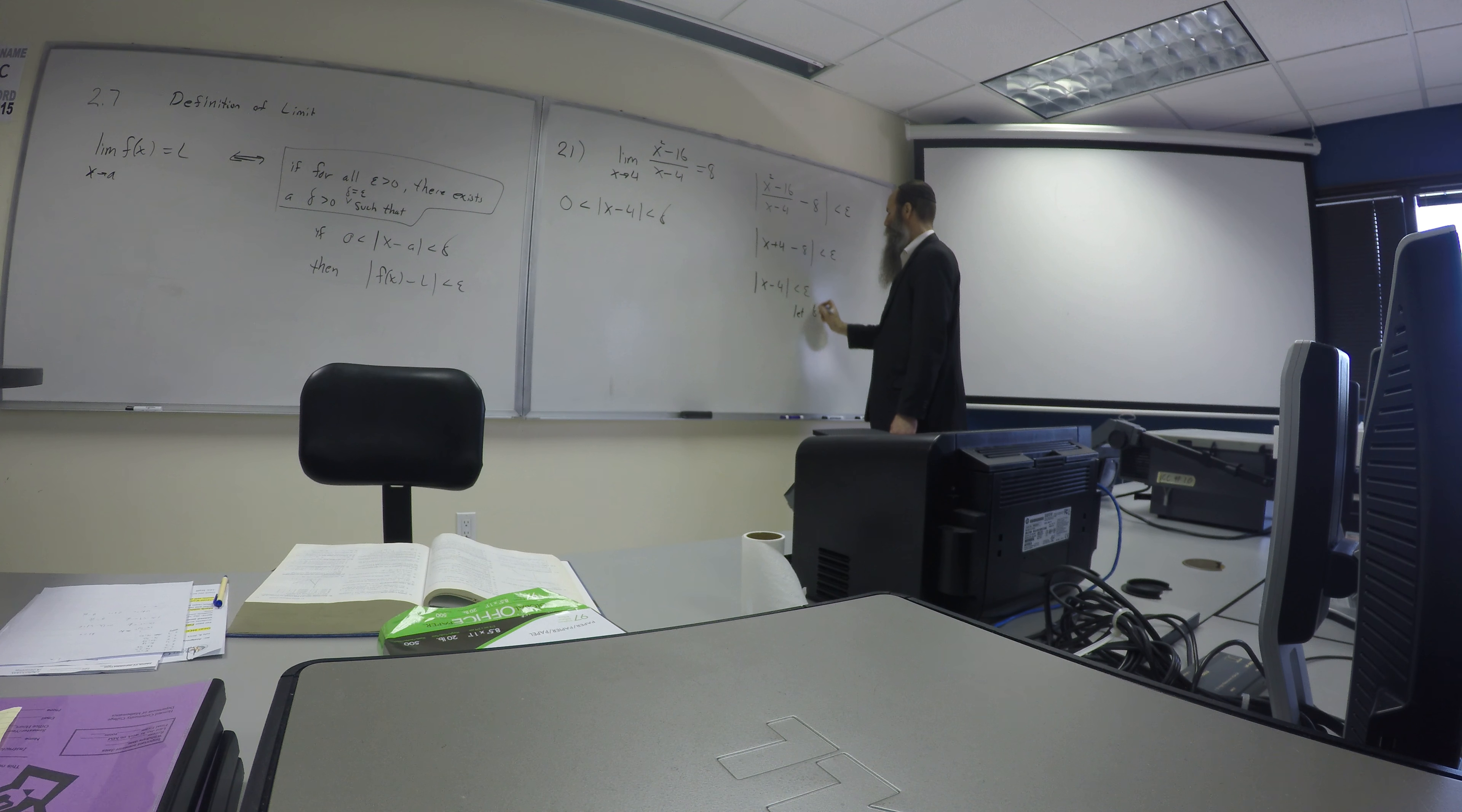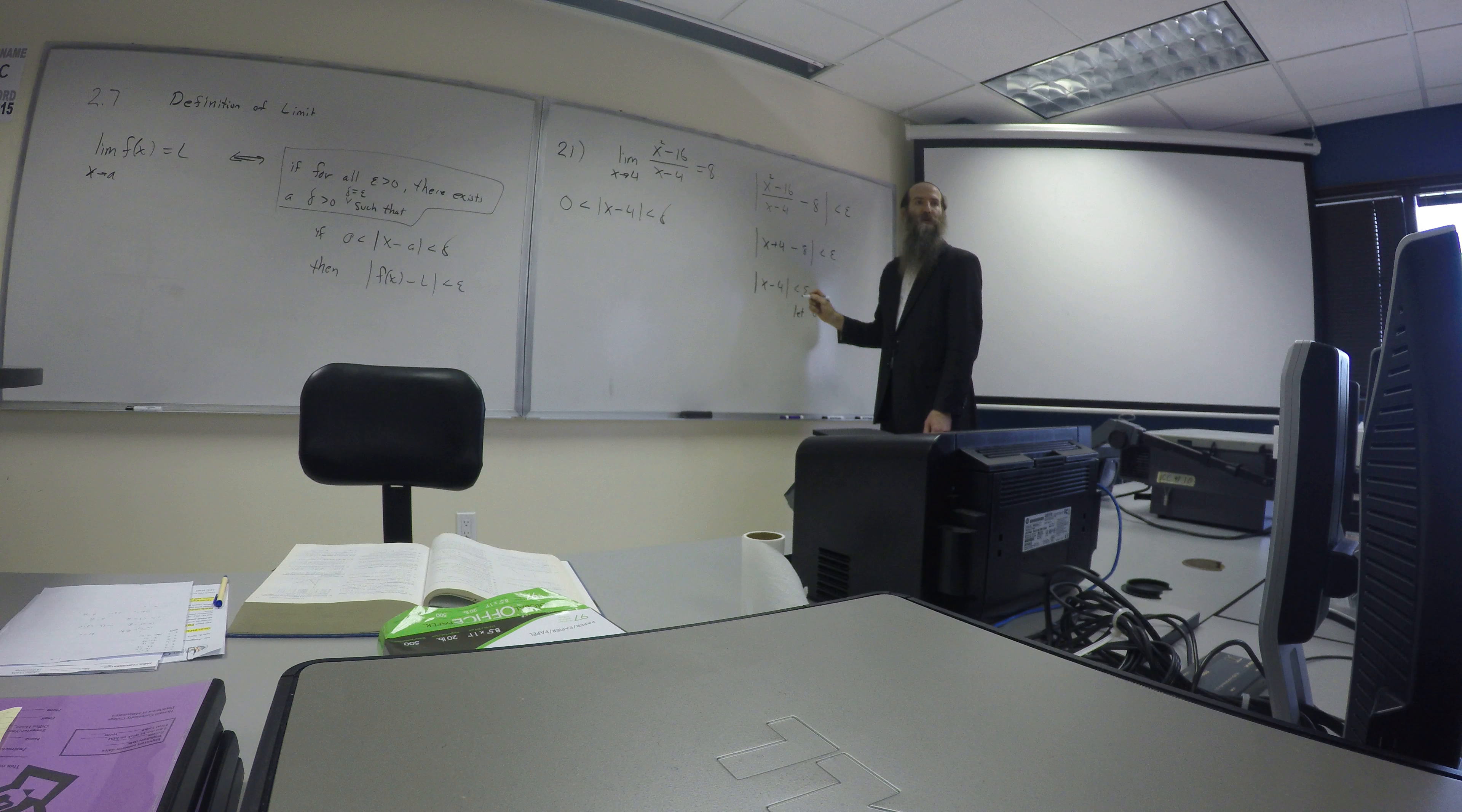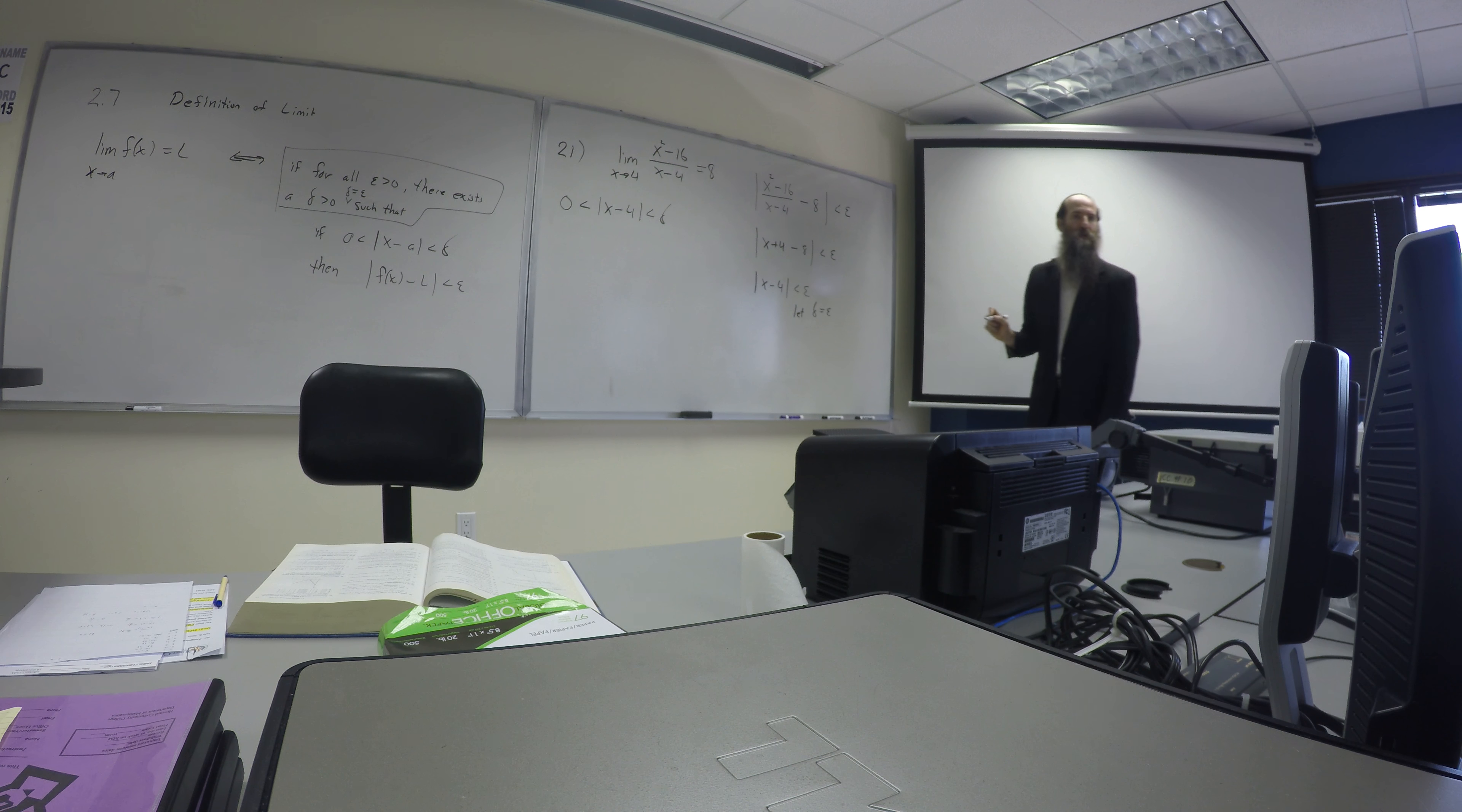So let, or pick, delta to be epsilon, right? Just comparing these two. So why should that be the case, though? Why should delta be epsilon in this case, like that first example we had?